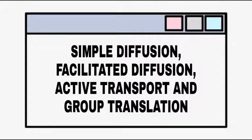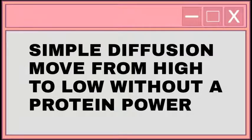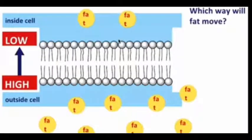Simple diffusion, facilitated diffusion, active transport, and group translocation. Simple diffusion moves substances from high concentration to low concentration without a protein carrier or energy. Molecules like fats, oils, and water can move directly across the cell membrane — they can move right through without any help. In this example, fats outside the cell naturally move from the high-concentration area to the low-concentration area inside.